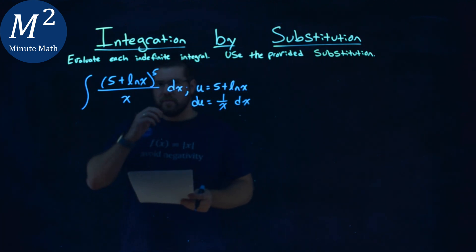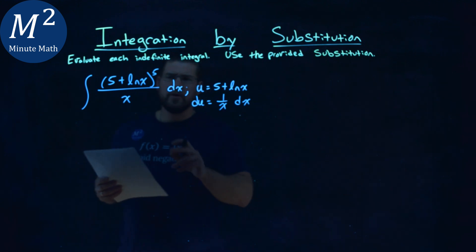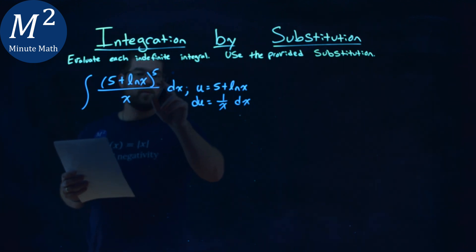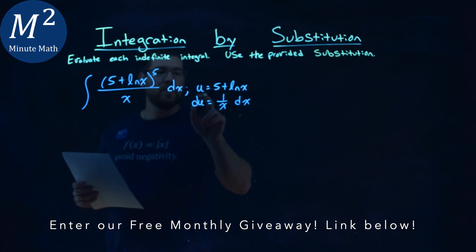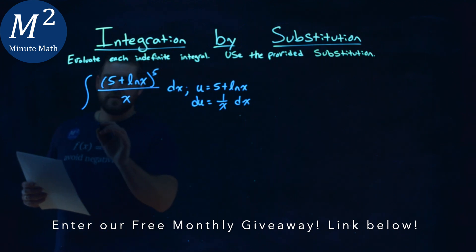And so now I want to see how I can plug this into my u substitution. And hopefully you can see we have 1/x going on right here, dx lines up with the du, and the u is that 5 + ln(x). So we substitute that in here,